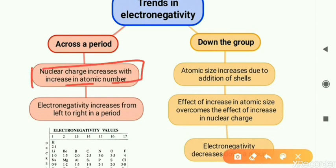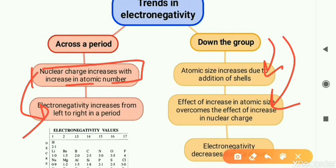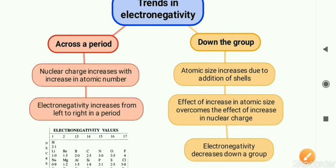Now the trends in electronegativity: across the period, nuclear charge increases because atomic number increases, so electronegativity increases as the nucleus becomes stronger. Going down the group, new shells are added, so atomic size increases. The effect of increasing atomic size overcomes the effect of increasing nuclear charge, and electronegativity decreases. The nucleus becomes less effective; the force of attraction on the outer electrons or shared pair of electrons is reduced, hence electronegativity decreases down the group.